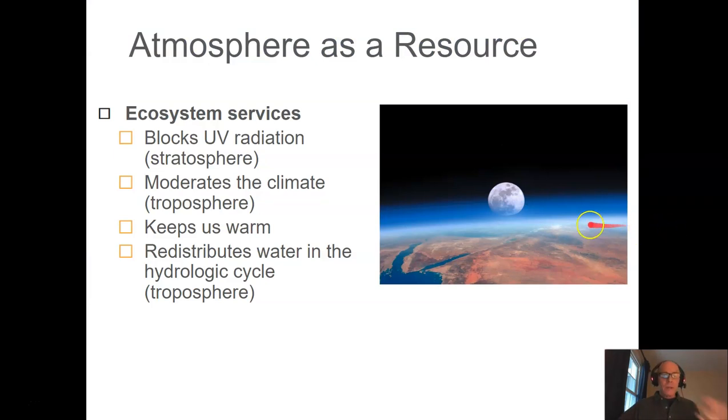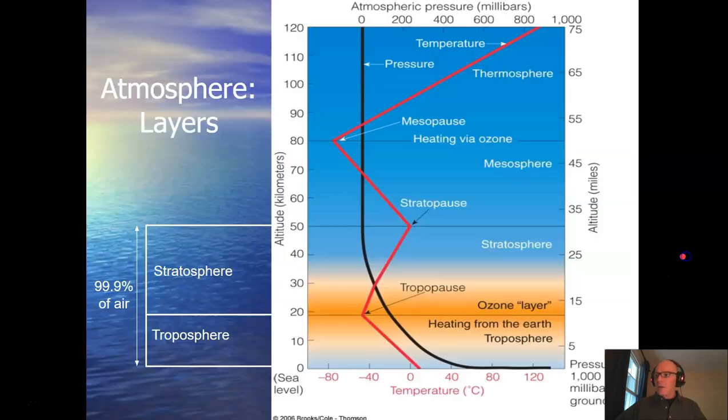The atmosphere performs some really important ecosystem services that we're going to learn about in this unit. It blocks and protects us from UV radiation which of course causes cancer. It moderates the climate. It distributes heat across the planet so keeps much of it warm. And of course it redistributes water as part of the hydrologic cycle. So all these things are interesting and important.